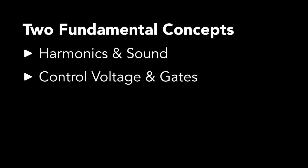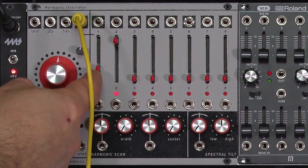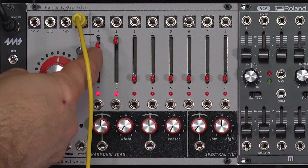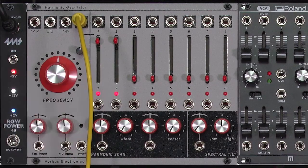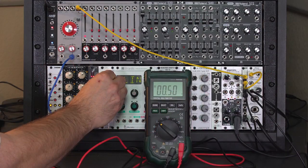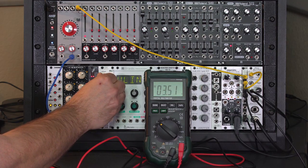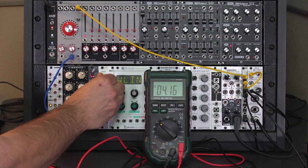In the remainder of this chapter, we're going to discuss two fundamental concepts of modular synthesis: how sounds consist of individual harmonics that you can shape, and how modular synthesizers are controlled using simple wires and voltages.